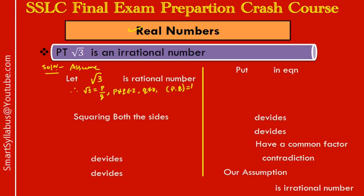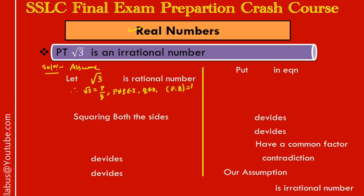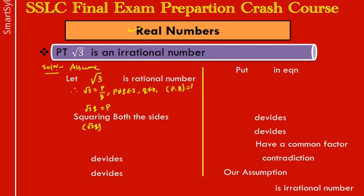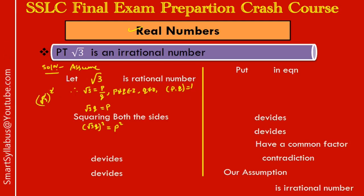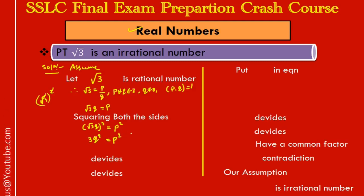Next step: from root 3 = p/q, cross multiply q to get root 3 · q = p. Now squaring both sides: (root 3)² · q² = p². When you square a root term, the square and root cancel, so root 3 squared gives just 3. Therefore: 3q² = p². Call this equation 1. We cannot simplify further from here.